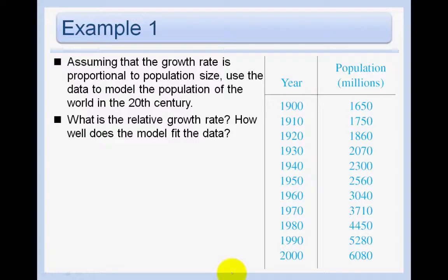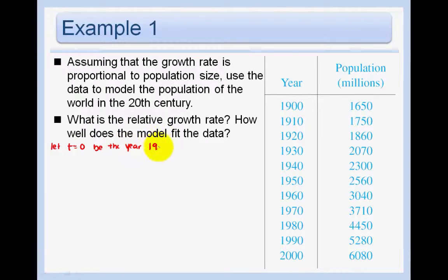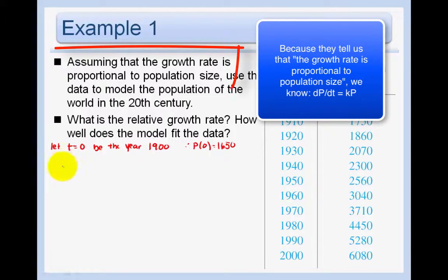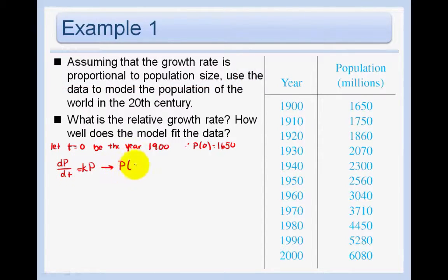Example 1: Assuming that the growth rate is proportional to the population size, use the data to model the population of the world in the 20th century. What is the relative growth rate? Let t = 0 correspond to 1900, so the initial population is 1650 million. Since dP/dt = kP, the population after t years is P(t) = 1650e^(kt).